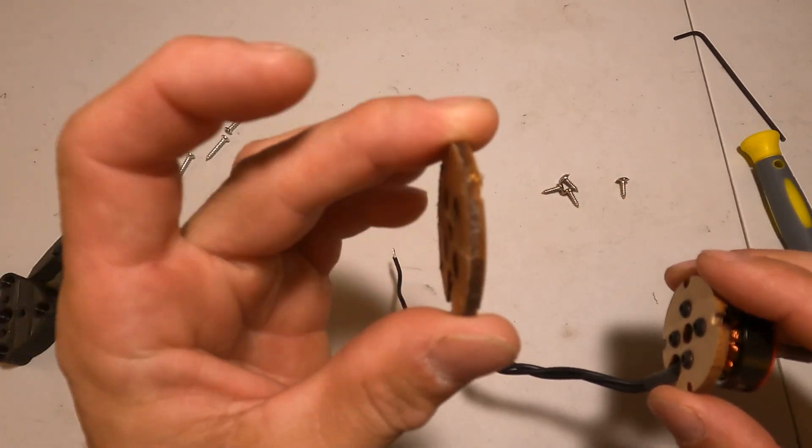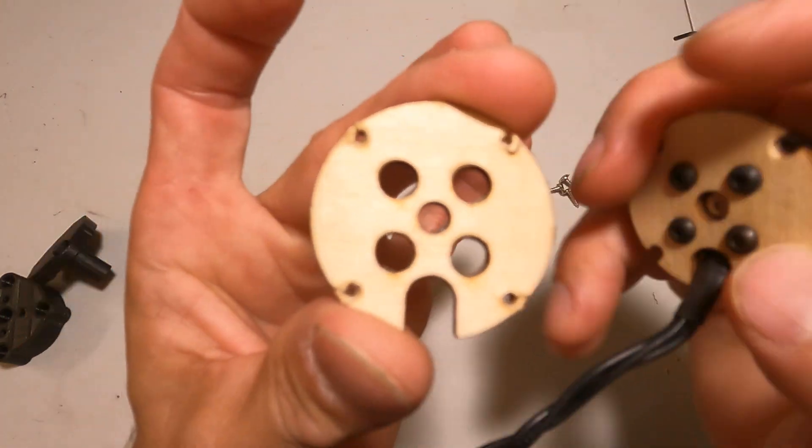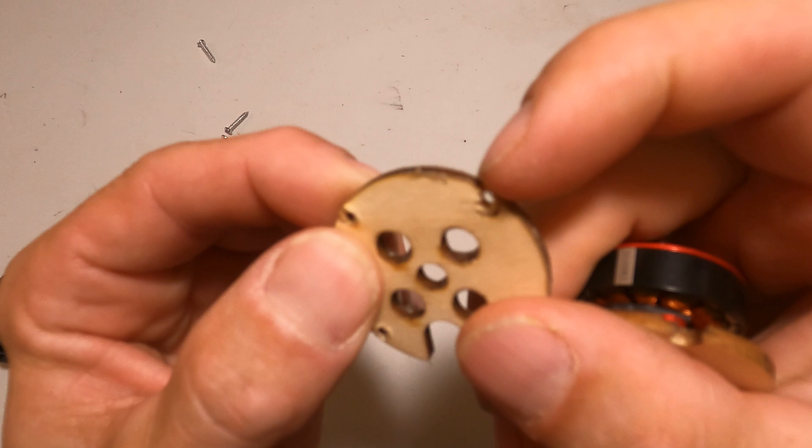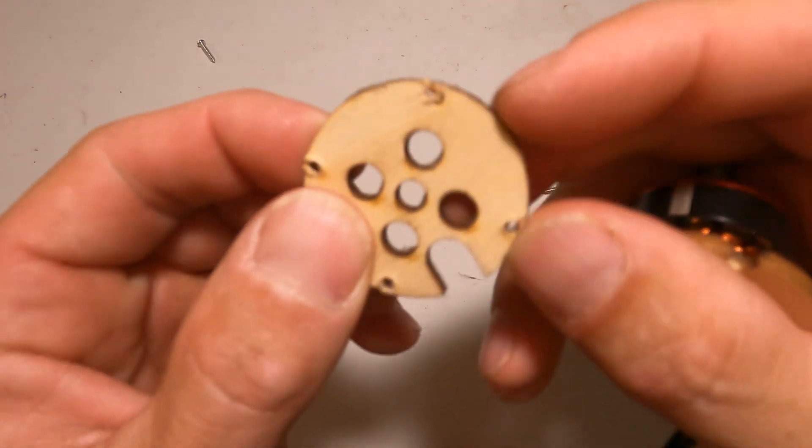This is what would be left on the actual aircraft mounted to the Dolphin. As you can see, even the holes on mine barely, you know, they got missed a little bit I guess you could say.